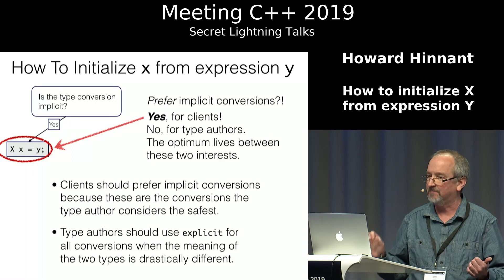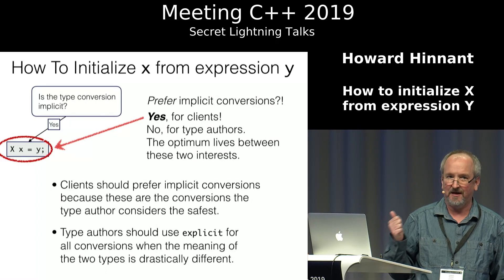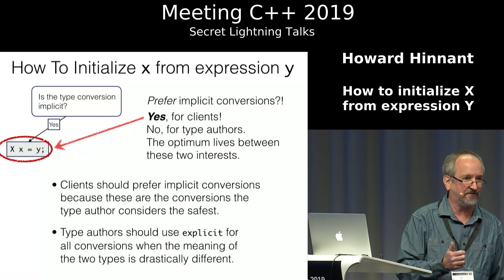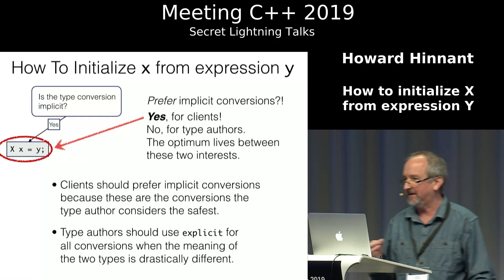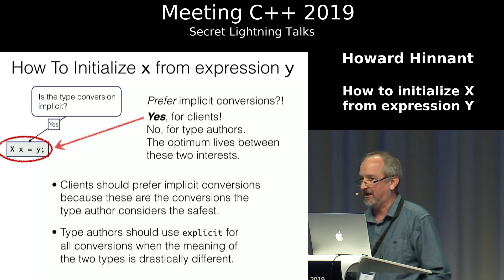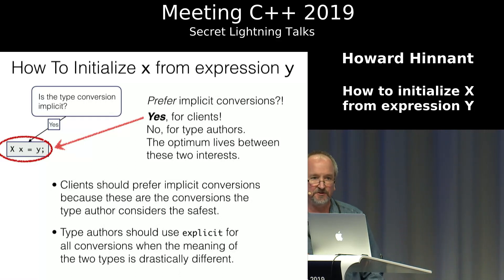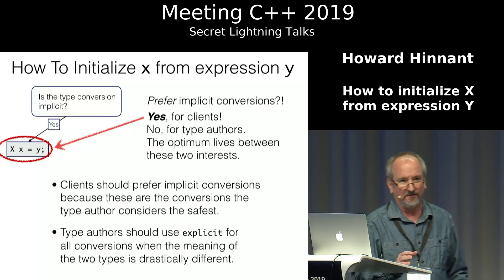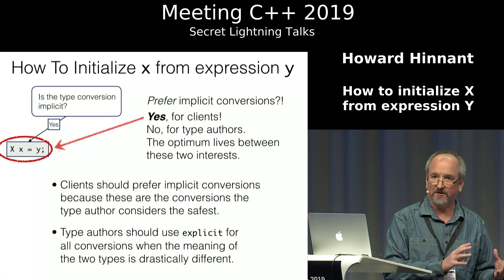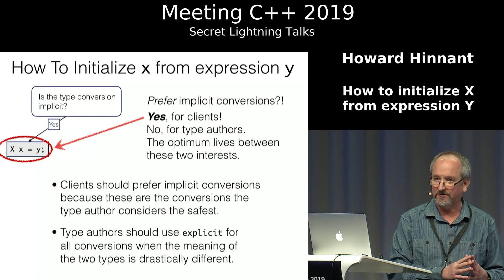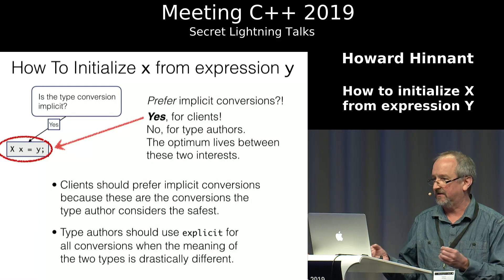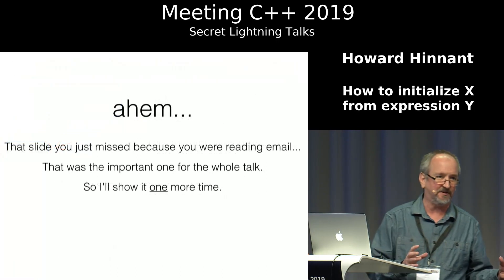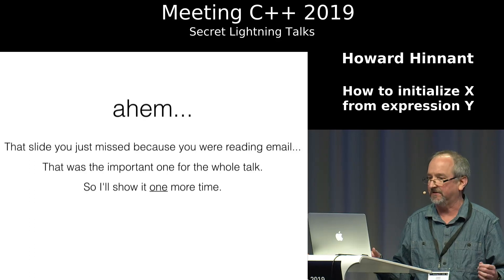So prefer implicit conversions? Yes — for clients. As a client, you should ask for the weakest conversion that will get the job done; use implicit conversions every time they compile. Type authors should reserve implicit conversions for those that are safe — conversions that don't change the meaning of a type and don't lose information.